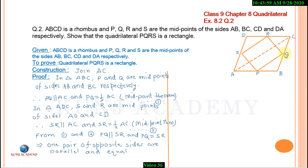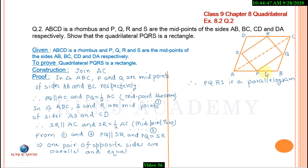Therefore, PQRS is a parallelogram. Now, since AB equals BC (sides of a rhombus are equal), it implies half of AB equals half of BC.